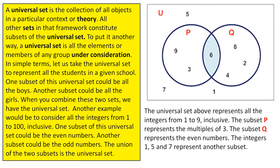A universal set is the collection of all objects in a particular context or theory. All other sets in that framework constitute subsets of the universal set. To put it another way, a universal set is all the elements or members of any group under consideration.